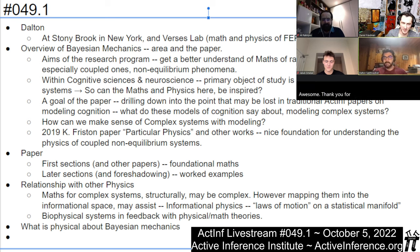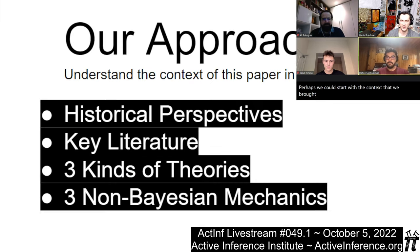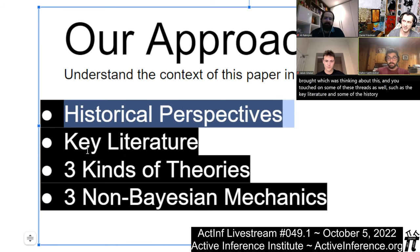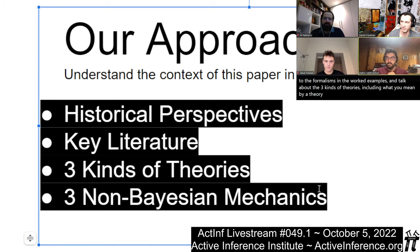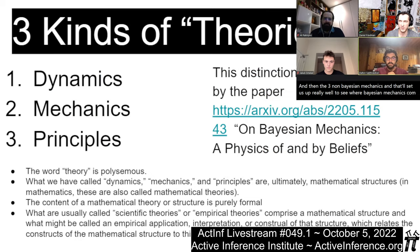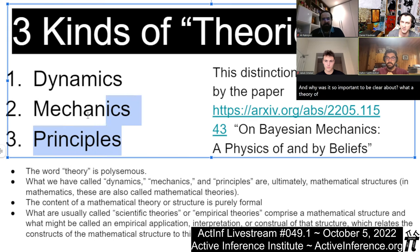Let's continue on in context setting before we get to the formalisms and worked examples, and talk about the three kinds of theories, including what you mean by a theory, and then the three non-Bayesian mechanics. What are dynamics, mechanics, and principles, and how were you using the word theory? Why was it so important to be clear about what a theory was and the distinctions among these three terms?